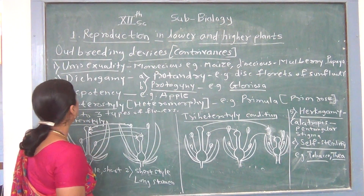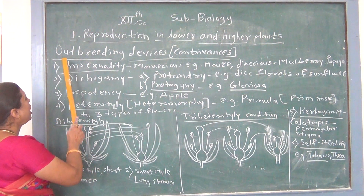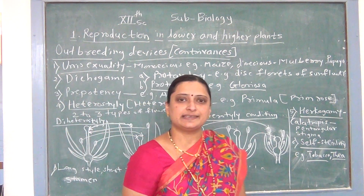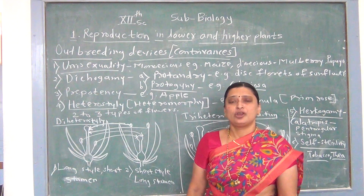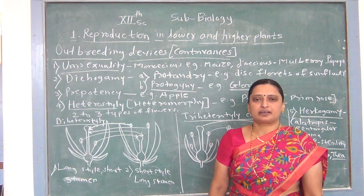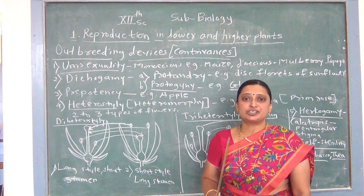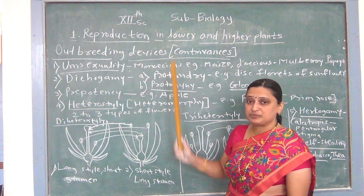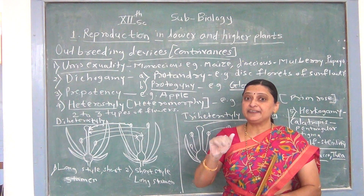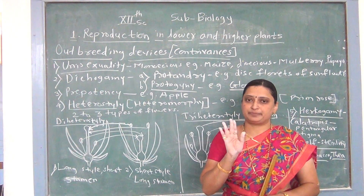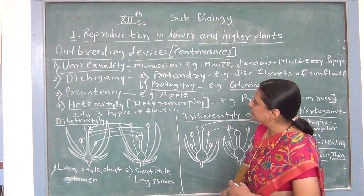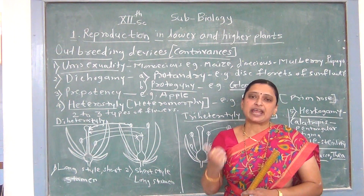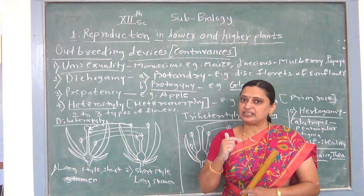In this lecture we will study about outbreeding devices. What are outbreeding devices? These are the contrivances regarding cross-pollination. Contrivances means conditions that lead to cross-pollination. Outbreeding devices are such devices that encourage cross-pollination but prevent self-pollination. Such conditions are collectively called outbreeding devices.